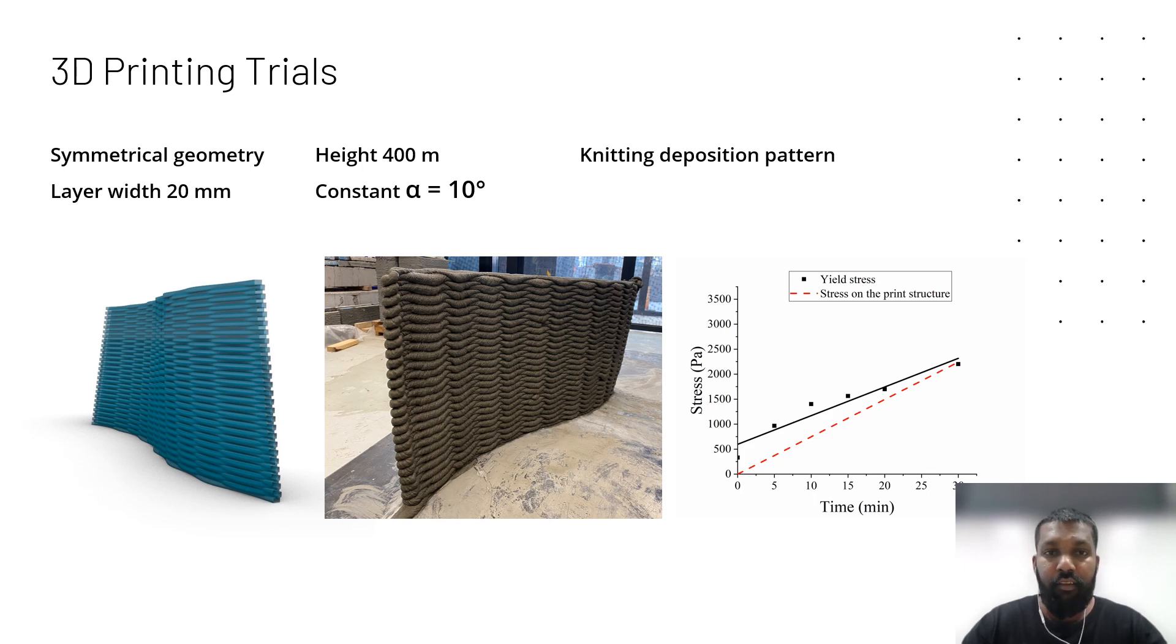Here is our first design. The leftmost side diagram shows the output file from Rhino and the actual printing is shown in the middle diagram. This has a symmetrical shape with constant overhanging angle of 10 degrees up to a height of 400 millimeters. Each layer is 10 millimeters tall, so the total layers are 40 layers.